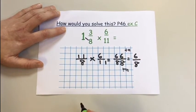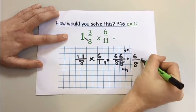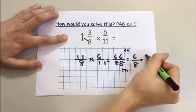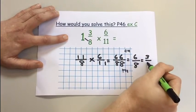6 eighths. I can simplify further. Half of 6 is 3 and half of 8 is 4.